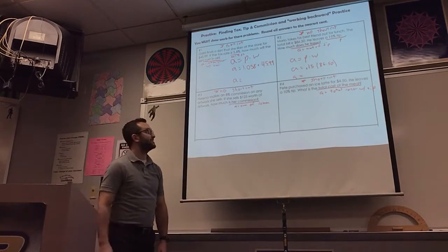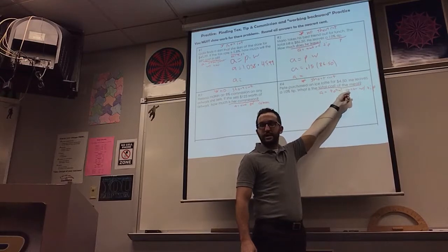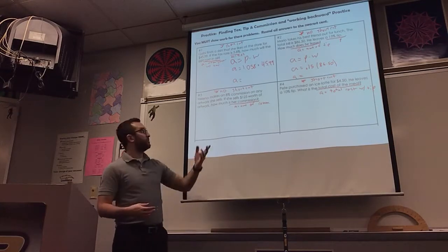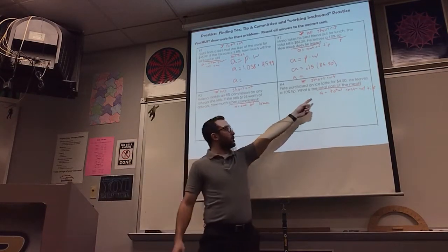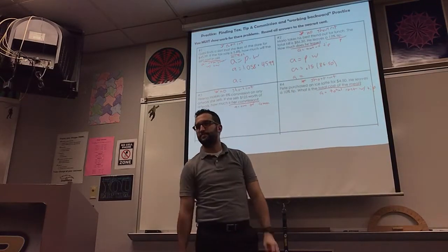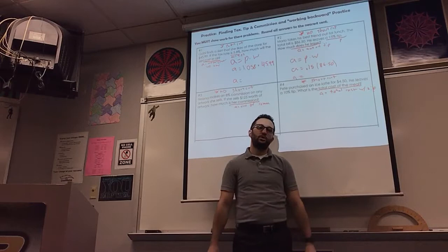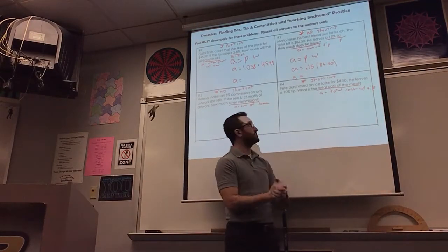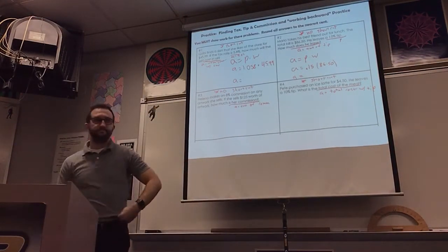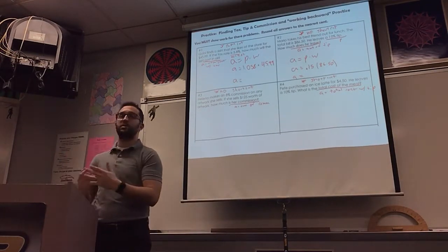Why? What are we looking for on number 4? We're looking for the total cost including the tip. Here on number 3, what are we looking for? Commission — just the amount of commission. So we would just need to use 8%. On number 4, what percent will we use? The total percent is 100%, so the total percent with tip is 110%. We need to know when we can use the shortcut and when not. The entire front is about determining when to use the shortcut.